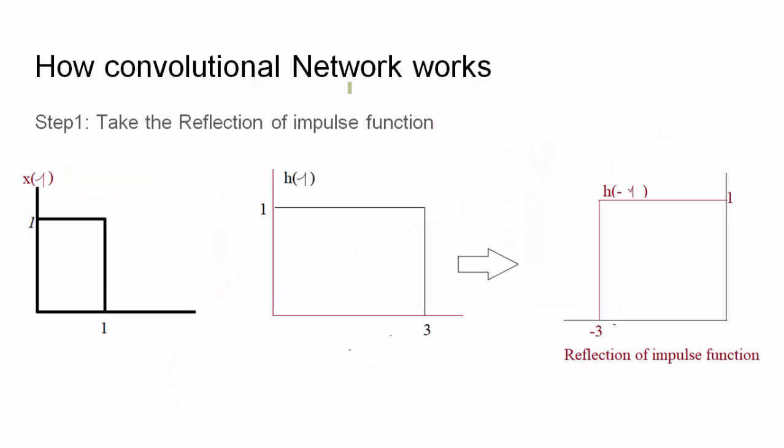The first step is to take the reflection of the impulse function h(τ). If the value is x(τ) — the input function — and h(τ) is the impulse function, then taking h(−τ) is the first step of convolution. In the reflection, the axis is reflected like we see an image in a mirror. The y-axis acts as the mirror: place the object on one side and after reflection it appears on the other side. This is the reflection of the impulse function.